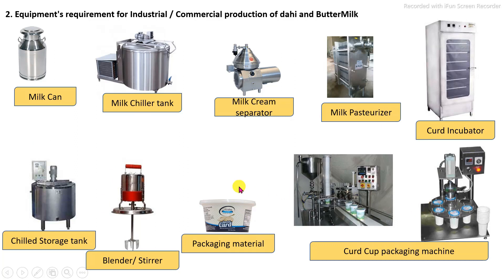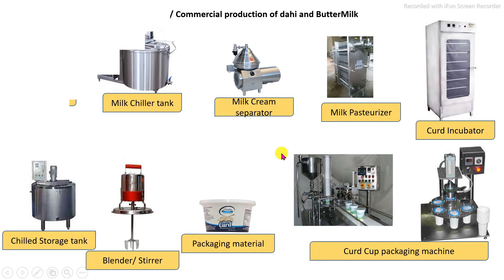For small or intermediate scale, pasteurization is carried out using a core making machine in which milk is directly boiled. After boiling, it is cooled to inoculation temperature, and after inoculation, it is incubated using an incubation chamber, and finally we get the curd.